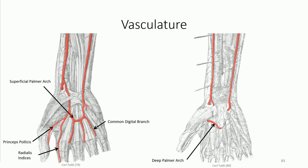Each splits, forming the proper digital branches that project distally as the principal vascular supply to each of these digits. The smaller division of the ulnar artery dives between the central and hypothenar compartments to anastomose with the much larger radial contribution.